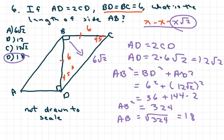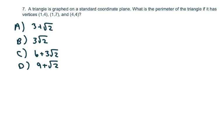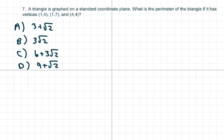Okay, the next one is here. We have a triangle here that's graphed on a standard coordinate plane. What's the perimeter? So we're going to go ahead and draw a quick sketch of this. We have (1,4). (1,4) goes right here.